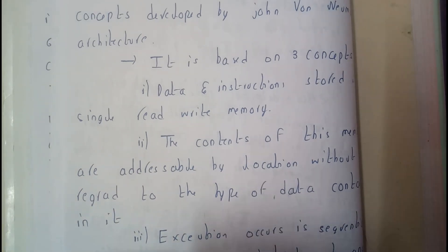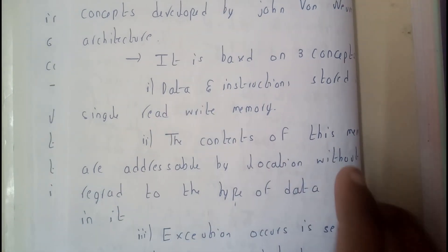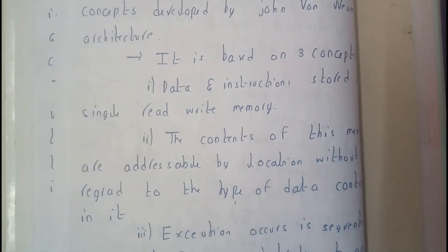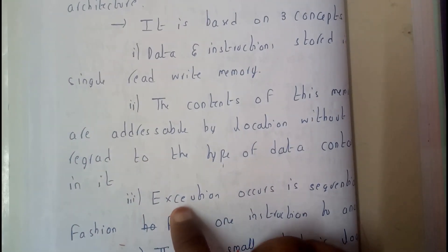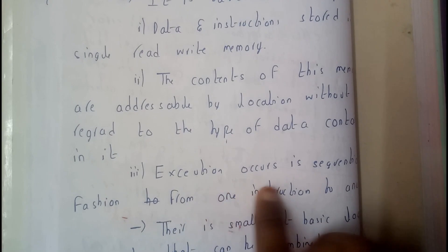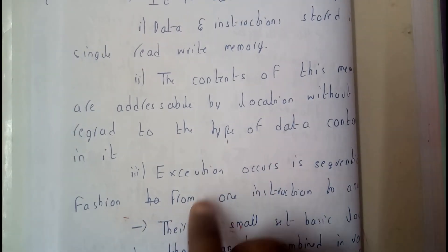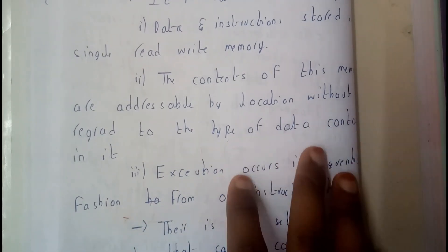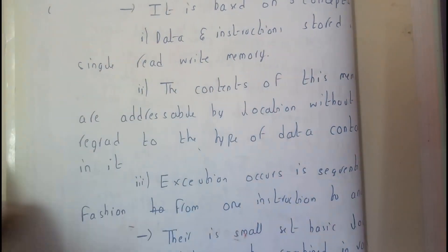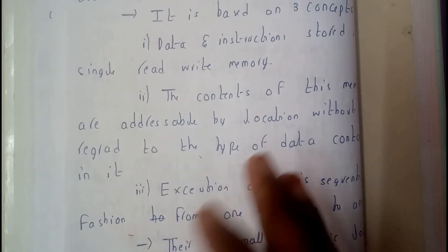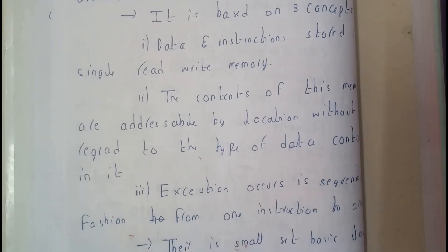Even if there may be a message, a text file, or anything, it can be accessed according to their addresses. Execution occurs in sequential fashion from one instruction to the other instruction. So these are the three concepts which von Neumann architecture explained.